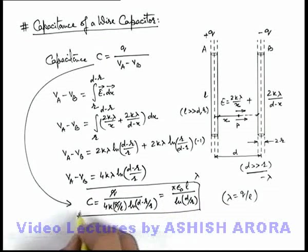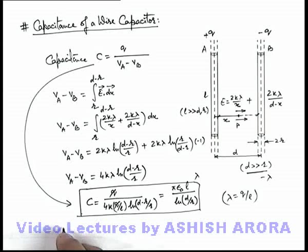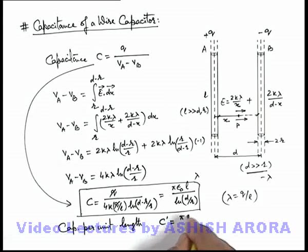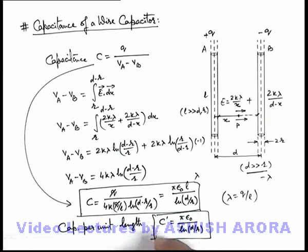So this is the capacitance of this wire capacitor. We can also calculate the capacitance per unit length. For the same we just divide this capacitance by l. Then this capacitance per unit length C prime can be written as pi epsilon not upon ln of d by r. So be careful about these results, as there can be many applications in which such results are used.